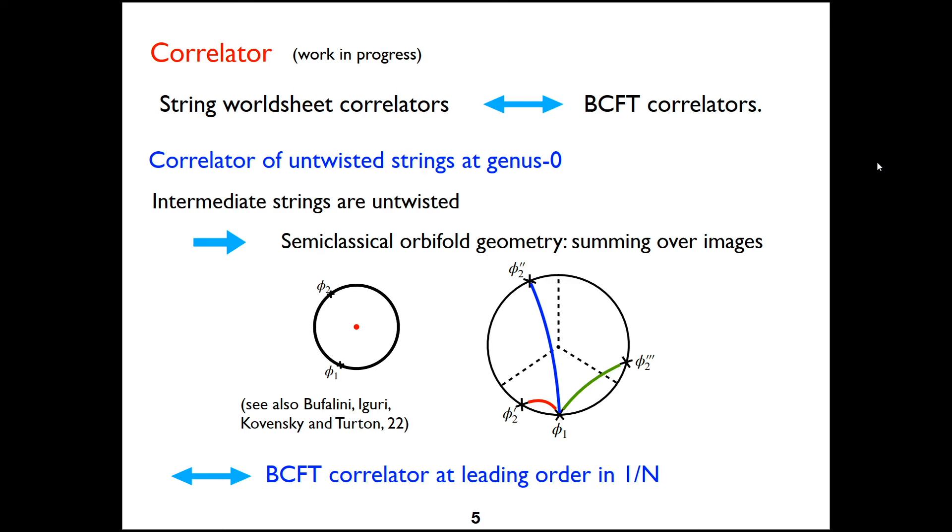We also need to understand the correlator. And we start with correlator of untwisted strings at genus zero. Because there are no string loops and all the external strings are untwisted, the intermediate strings are untwisted also. We can compute the correlator by summing over the images and this will give us a property of the semiclassical orbifold geometry. We also find that this result can be reproduced exactly from the boundary CFT correlator at leading order in the one over N expansion.